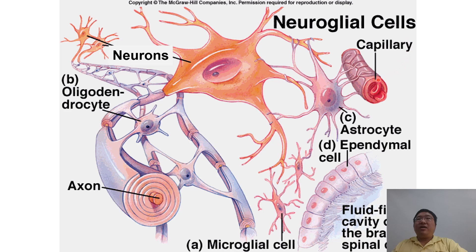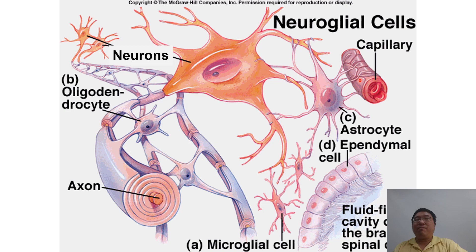Another type of glial cell is the astrocyte. As the name implies, the shape of the cell is like a star with many processes. We don't see the processes when we stain with H&E stain, but with silver stain we can observe the star shape. This is a very important supporting cell. It supports the neurons, is responsible for the blood-brain barrier and for tissue repair of the brain. It is also responsible for the most common type of brain tumor — astrocytoma.